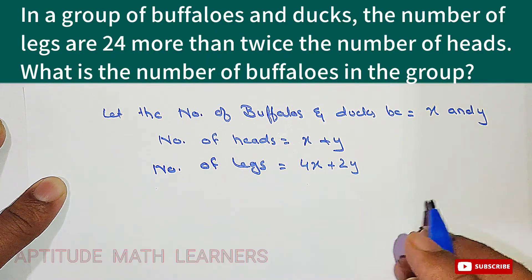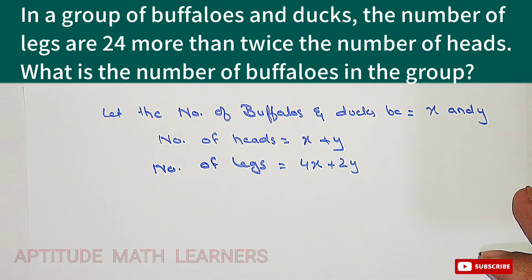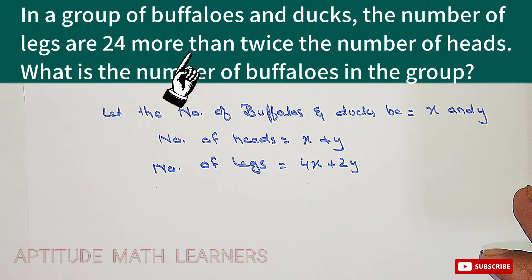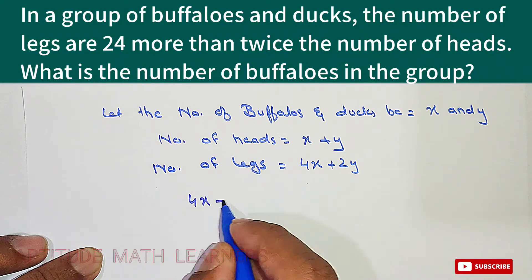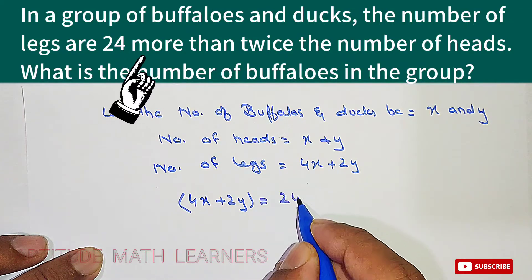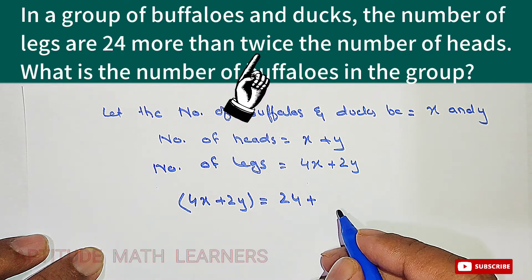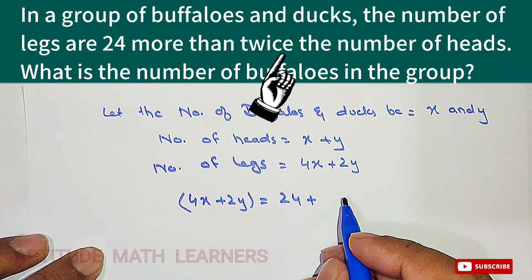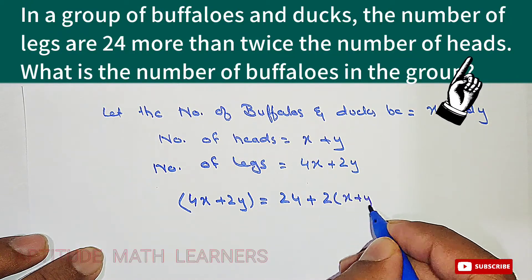According to the given condition in the question, the number of legs are 24 more than twice the number of heads. So we write: 4x plus 2y equals 24 plus 2 times (x plus y).